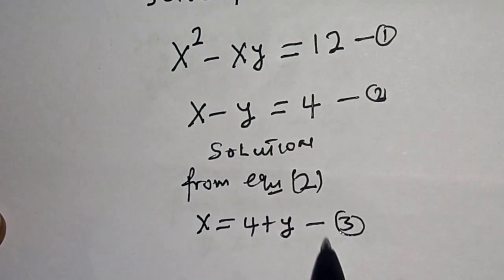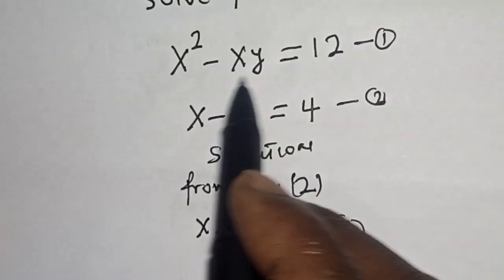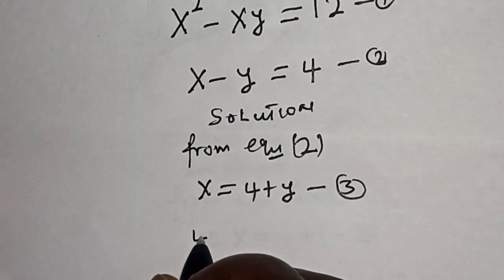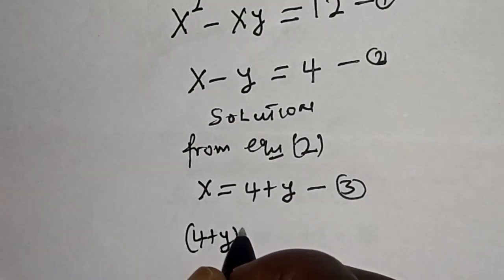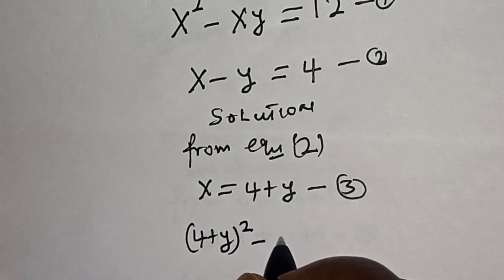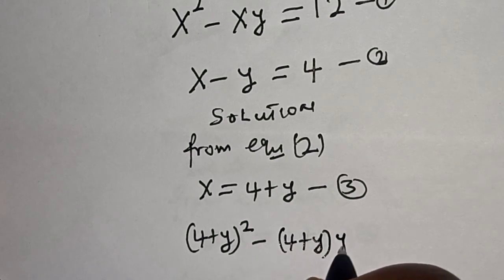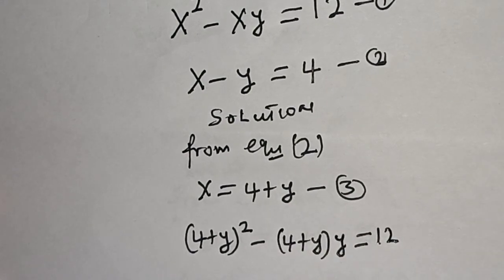Now let's substitute for x in equation 1. That is, (4 plus y) squared minus (4 plus y) times y is equal to 12.